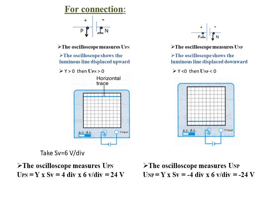If we reverse the connection, the oscilloscope measures U_np. From the figure, Y = −4 divisions since the luminous line is displaced downward below the horizontal axis. Therefore U_np = −4 × 6 = −24 volts. This means U_pn = −U_np.